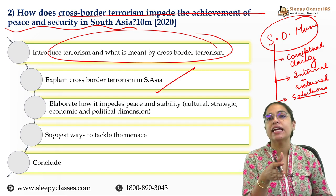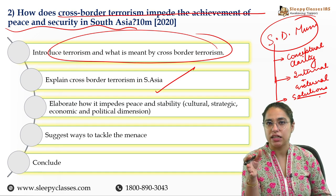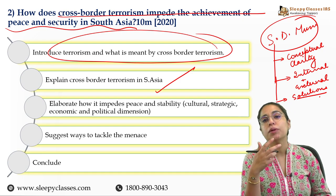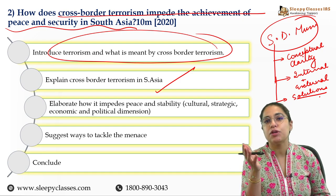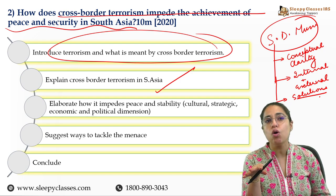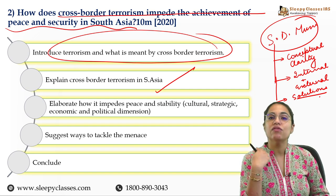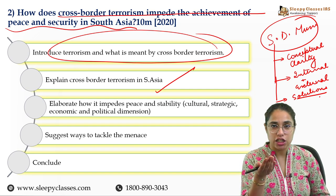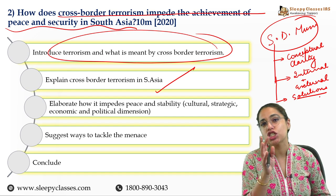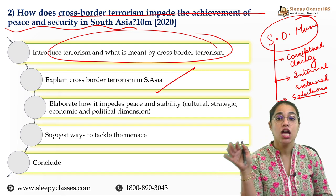Then we will specifically talk about South Asia — what are the areas where cross-border terrorism exists, how problematic it is, and then in various areas its impact in cultural, strategic, economic, and political dimensions where it impedes peace and stability. Last but not least, we will suggest certain solutions and recommendations through which we can tackle cross-border terrorism, before concluding the answer.